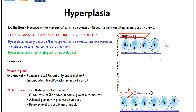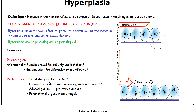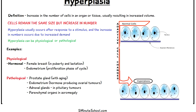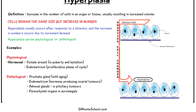Some examples of the physiological form of hyperplasia include hyperplasia of the female breast in cases of puberty and lactation, and hyperplasia of the endometrium in the uterus, which occurs during the menstrual cycle.